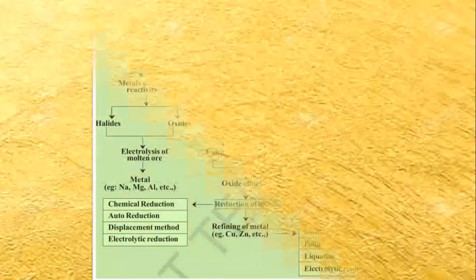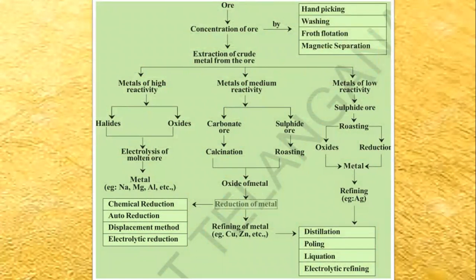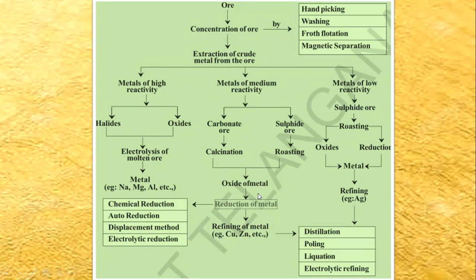Now let us see what is given in your textbook. These are the steps from ore to extraction based on reactive nature. High reactive metals, when in the form of halides and oxides, are extracted through the electrolysis method. Moderately reactive metals, when in the carbonate or sulfide form, are first converted into oxides by chemical reaction and then reduced to the metals.